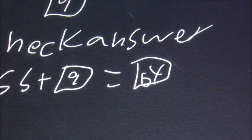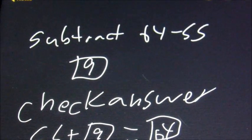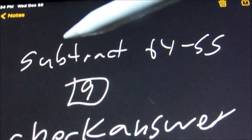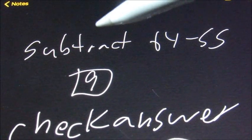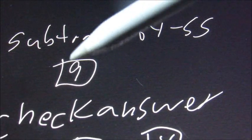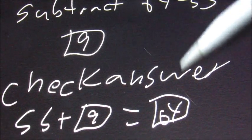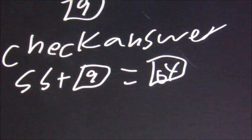So for the credit for this section, what you need to do is email me this. Just put subtract 64 minus 55 equals 9. To check your answer, 55 plus 9 equals 64.